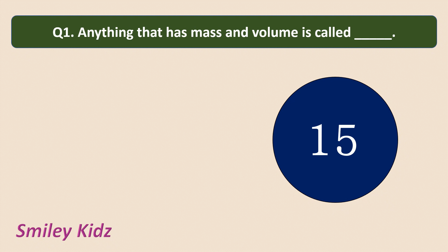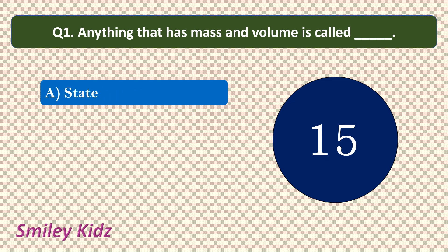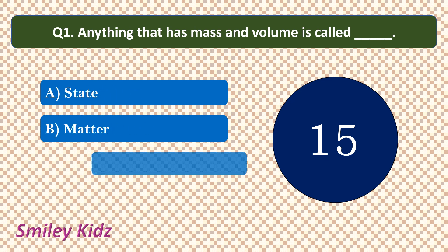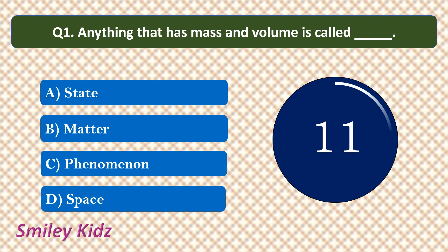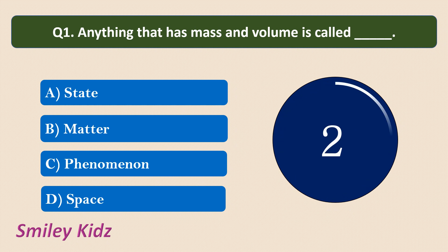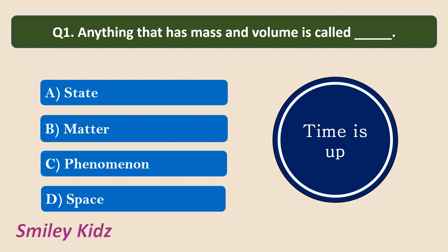Question number 1: Anything that has mass and volume is called — options are: State, Matter, Phenomenon, Space. Your time starts now. Your time is up. The correct answer is Matter. Anything that has mass and volume is called matter.